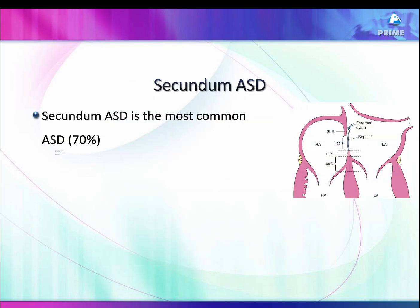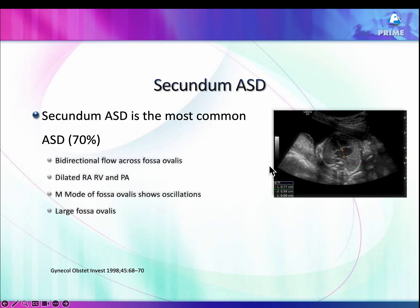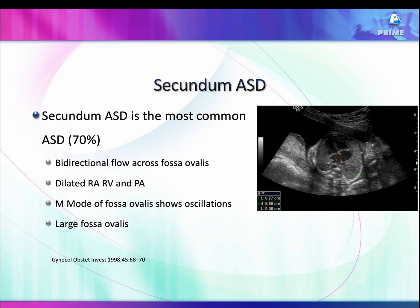The secundum ASD is the commonest ASD seen in neonates and adults. In the fetus, it happens in the same place where the fossa ovalis is. This defect is the commonest one, but unfortunately in the fetus it is very difficult to image with confidence, because you have a fossa ovalis and you can't really make out a secundum ASD.